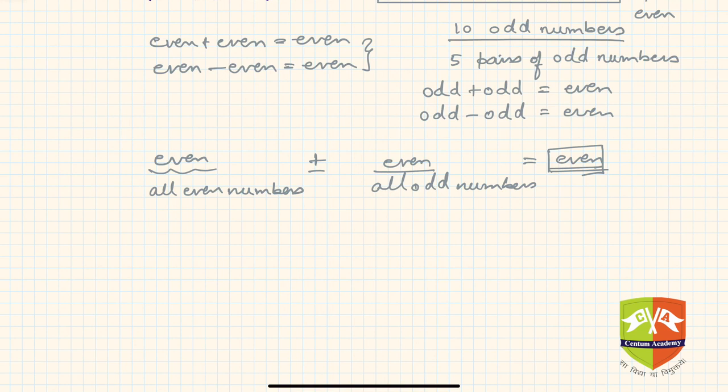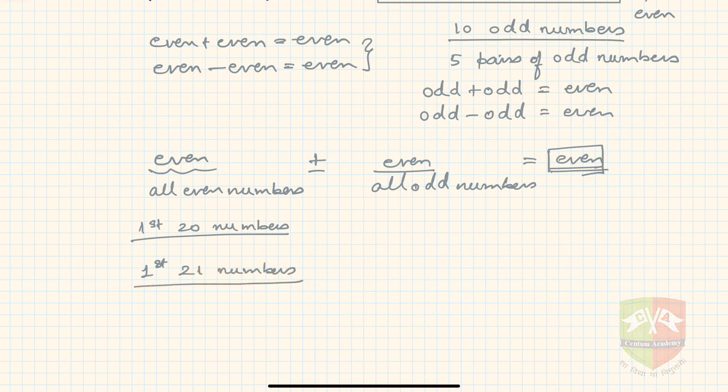Food for thought for you will be: what if instead of taking the first 20 numbers, we would have taken let's say the first 21 numbers—that is, after 20 we had 21 also—then who would have won? This is for you to do as an exercise. Thank you.